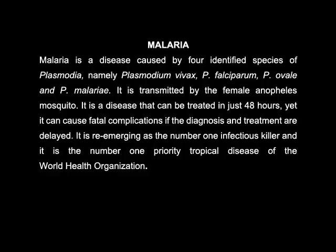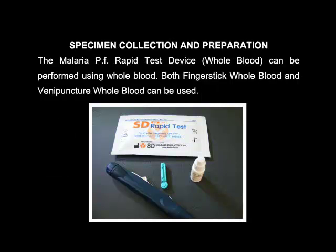It is regarded as the number one infectious killer and is the number one priority tropical disease of the World Health Organization. The Malavia PF Rapid Test is a rapid chromatographic immunoassay for the qualitative detection of circulating Plasmodium falciparum in whole blood.